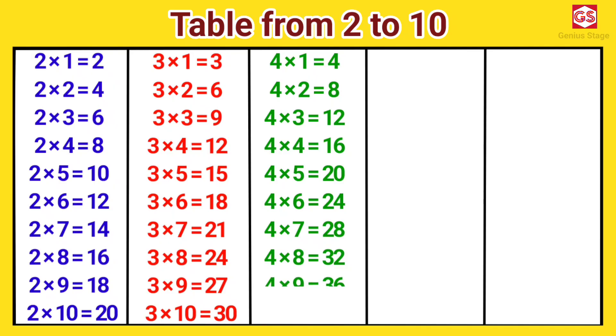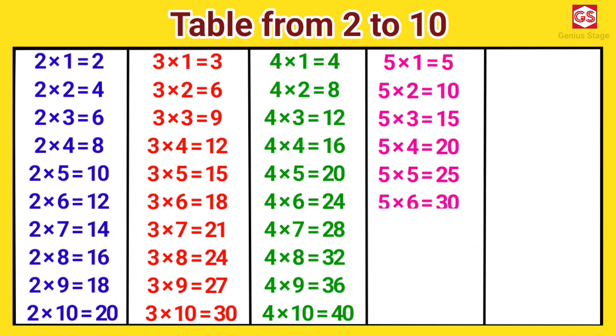32. 4 nines are 36. 4 tens are 40. 5 ones are 5. 5 twos are 10. 5 threes are 15. 5 fours are 20. 5 fives are 25. 5 sixes are 30. 5 sevens are 35. 5 eights are 40. 5 nines are 45